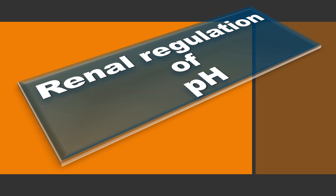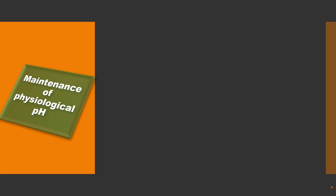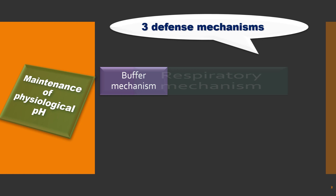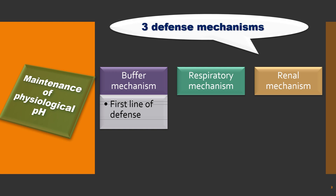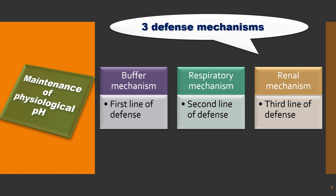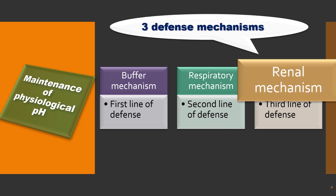This is Dr. Vijay. Today we are going to study about regulation of acid-base balance by the kidney, that is renal regulation of pH. We already studied there are three different defense mechanisms in order to maintain normal pH: buffer mechanism, respiratory mechanism, and renal mechanism. Buffer mechanism is the immediate and fast mechanism, so it is called first line defense, whereas lungs are the second line defense and kidney is the last or third line defense.